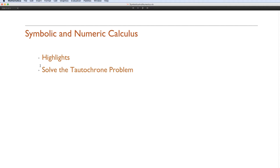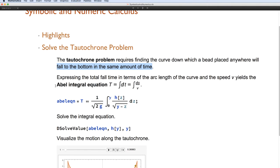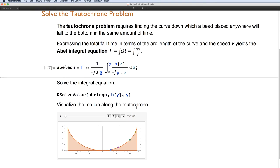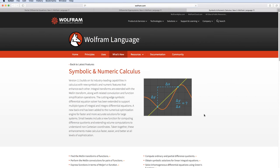So as an example of integral equations, this is the Tautochrone problem, which requires finding a curve down which, if you place a bead anywhere, it will fall to the bottom in exactly the same time. Now this involves solving an Abel integral equation. So that's the equation. We solve the D-solve value. And after a bit of work, you can actually simulate the Tautochrone. And you can see over here that the bead can start anywhere it likes, but it always reaches the bottom at exactly the same time.